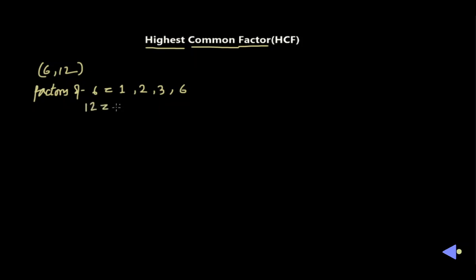Now the factors of 12 are: 1, then 2 and 6 since 2 times 6 equals 12, then 3 and 4 since 3 times 4 equals 12, and 12 itself. Those are the factors of 12.